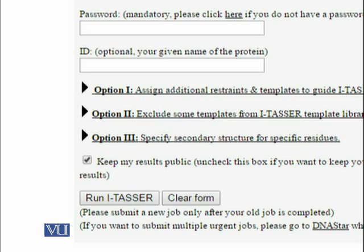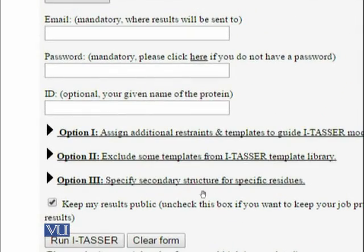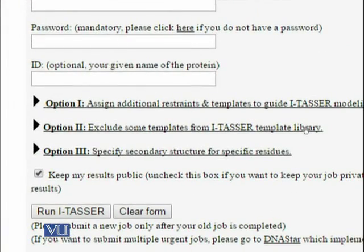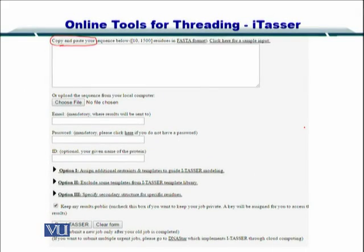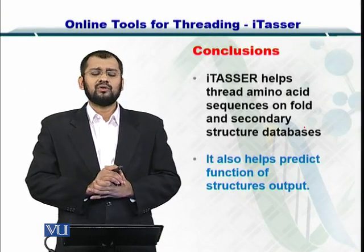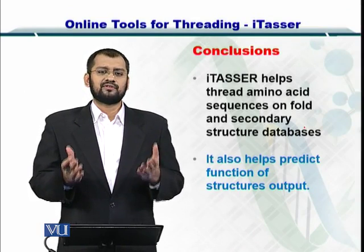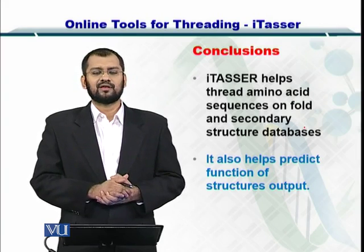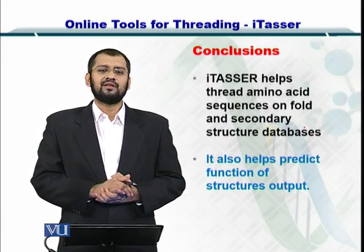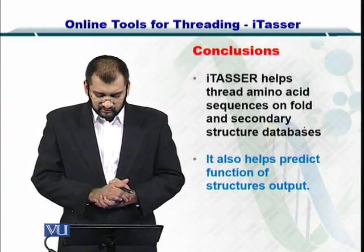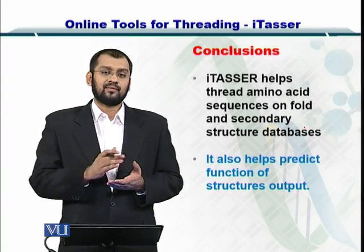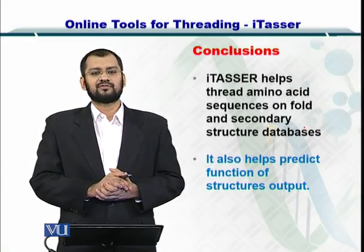I-TASSER is this simple to use. If you are an advanced user, you can assign additional restraints and templates to help I-TASSER modify the modeling process. All you have to do is input your amino acid sequence, provide your email address and password, and you will get an email from I-TASSER — perhaps after one day — with the predicted structure. Besides the structure, I-TASSER will also give you the probable function of the protein.